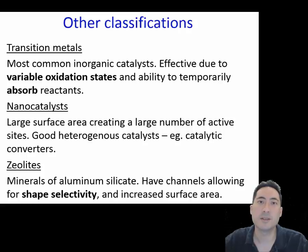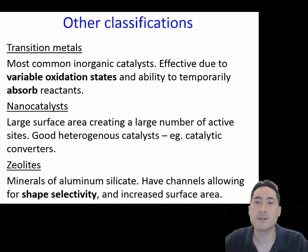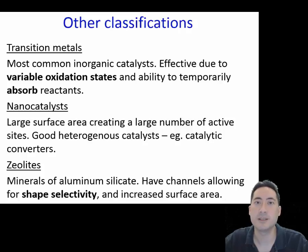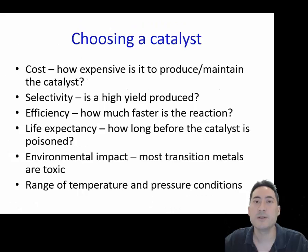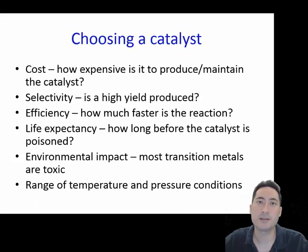Oxidation states refer to the position of their electrons. Nanocatalysts and zeolites are also important as they increase surface area and allow for shape selectivity. The following is a list of factors important in determining the type of catalyst to use.